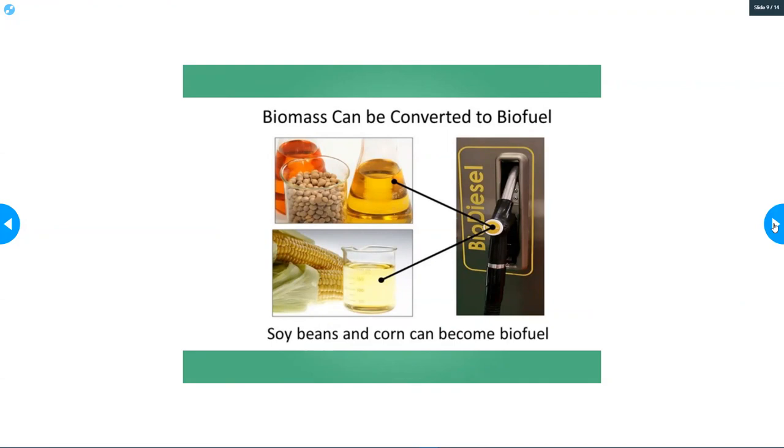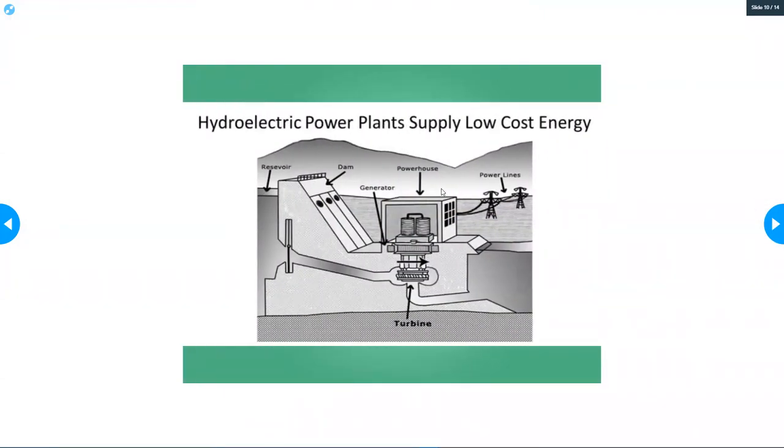Hydroelectric power plants supply low-cost energy. Hydroelectric uses water—you're going to get a river and they build a dam up on the river. When the water in the reservoir goes down through the tube, it spins the turbine.